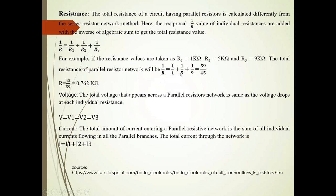Using R1 equals 1 kilo ohm, R2 equals 5 kilo ohm, and R3 equals 9 kilo ohm, the calculation gives 59 upon 45 which equals 0.762 kilo ohm.